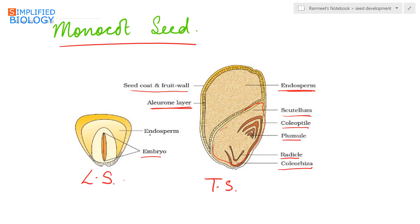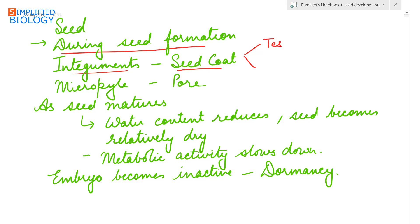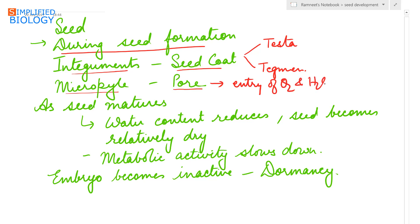In the longitudinal section of the monocot seed, the embryo lies at the center surrounded by the endosperm, which occupies the main part of the seed. During seed formation, the integuments of the ovule harden and form the seed coat, which consists of two parts: the outer thick testa and the inner thin tegmen. The micropyle present on the integuments appears as a pore in the seed, facilitating entry of oxygen and water during seed germination.